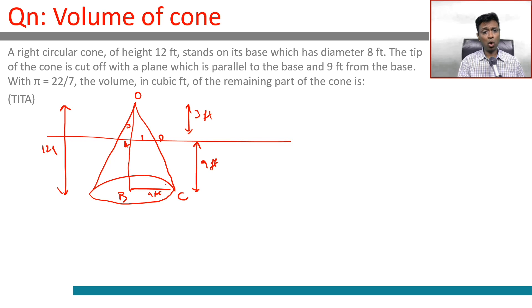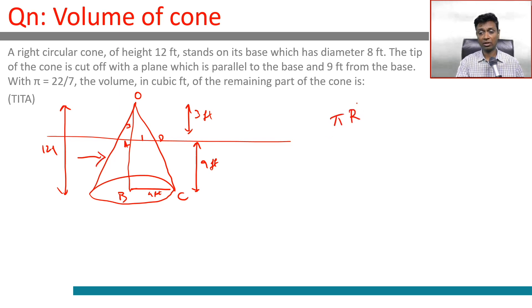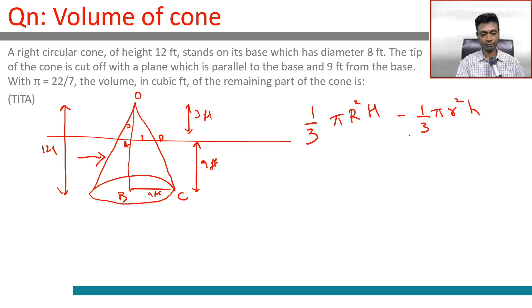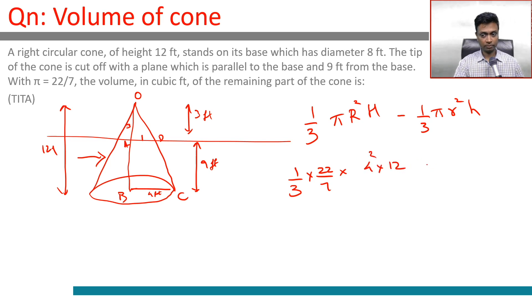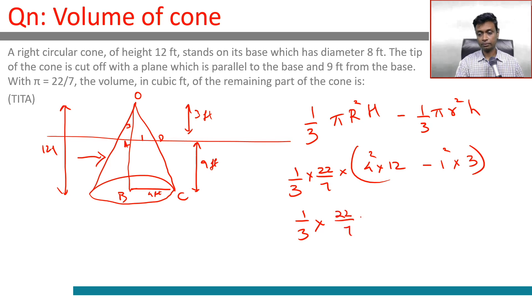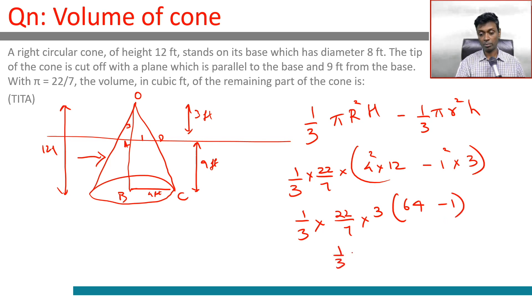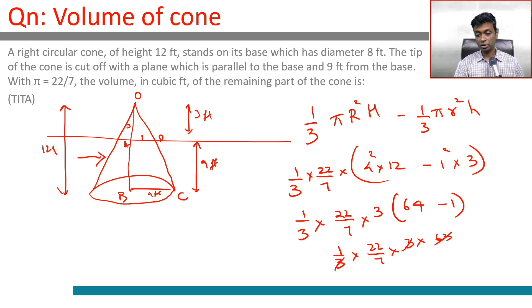Using pi equal to 22/7, we find the volume of the remaining part of the cone, called a frustum. The volume equals one-third pi r² h for the big cone minus one-third pi r² h for the small cone. So: 1/3 × 22/7 × (4² × 12 − 1² × 3) = 1/3 × 22/7 × 3 × 63. Since 63 divided by 7 is 9, this gives 22 × 9.